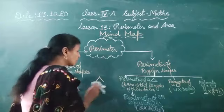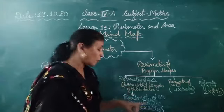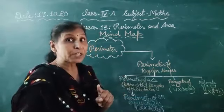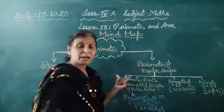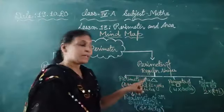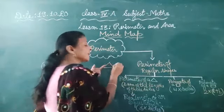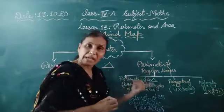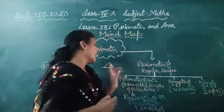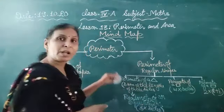Hamara equilateral triangle ka perimeter kya aa jayega? That is 6 cm. So you know how to find out the perimeter of an equilateral triangle. In a simple triangle, we find out the perimeter as the sum of the lengths of three sides — all sides given, we add them. And in an equilateral triangle, if one side is given, we multiply by 3 to find the perimeter.